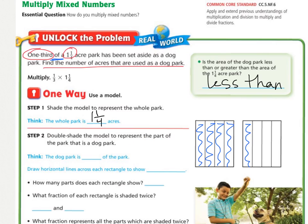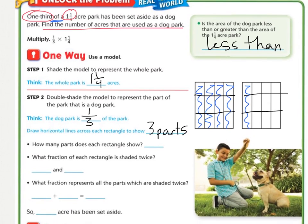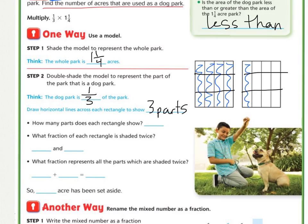And now we're going to double shade the model that represents the part of the dog park. And remember, the dog park is one-third of the park. So now we're going to draw horizontal lines to show three parts. Okay, so now that we have those, how many parts does each rectangle show? How many little parts in there? Well, this is a four by three, so there are twelve inside that whole rectangle. And now we need to shade in one-third. Okay, so because one-third is this way, we need to shade in one of the three that we did. So there's one in that part.